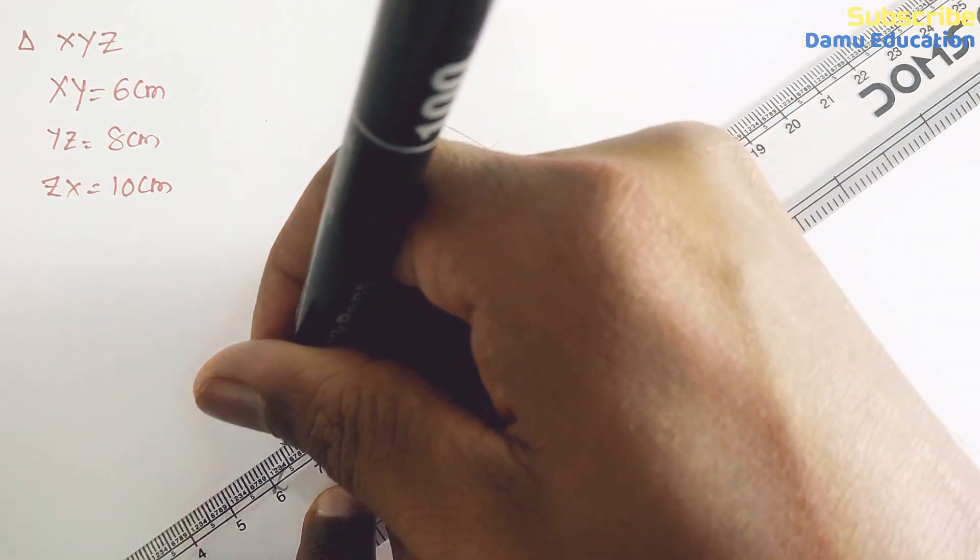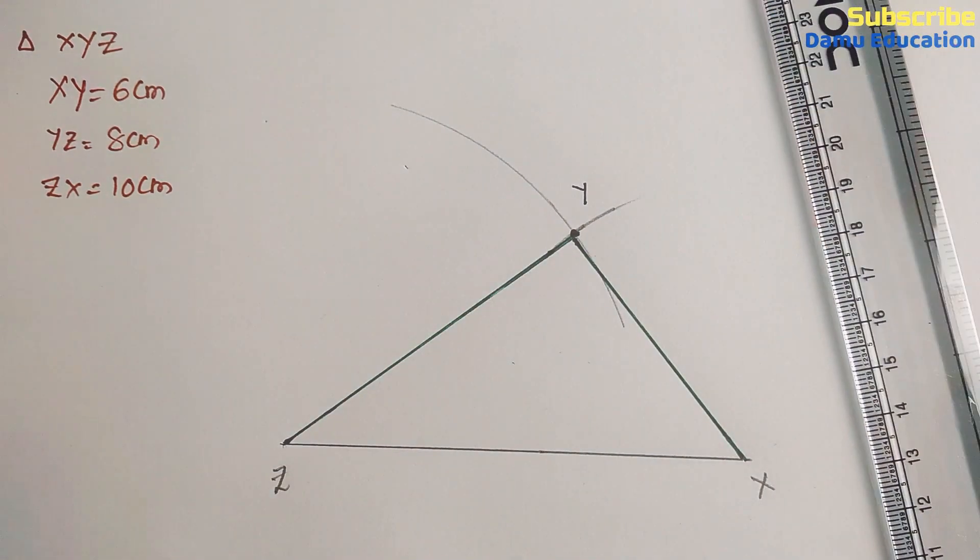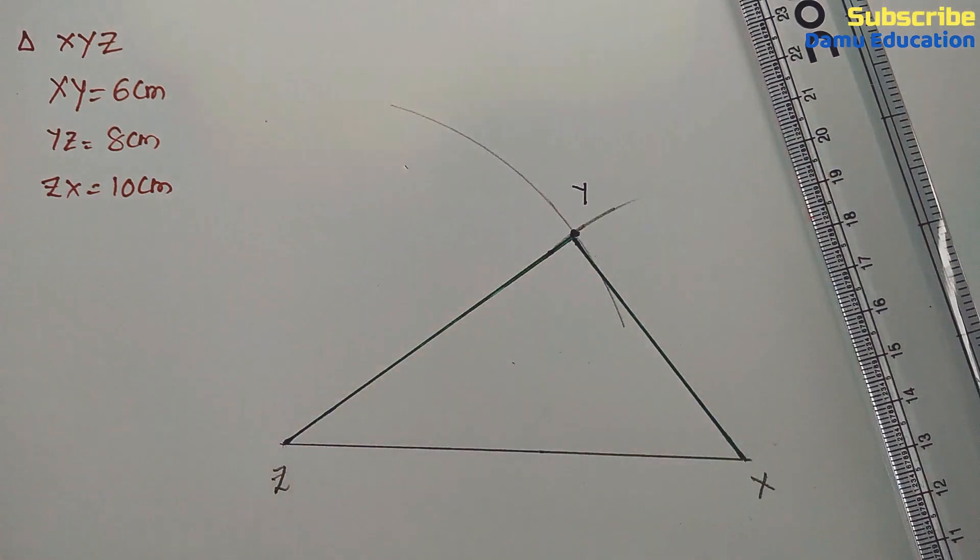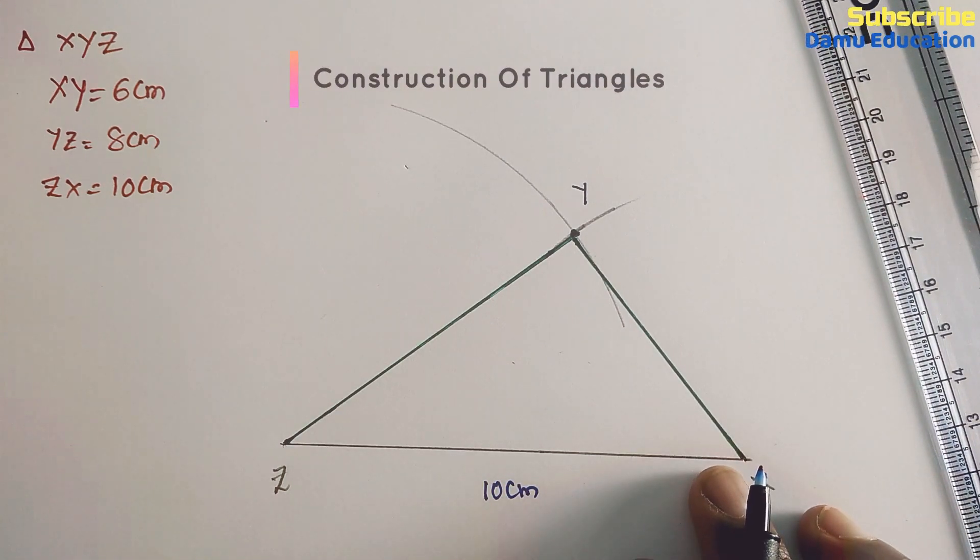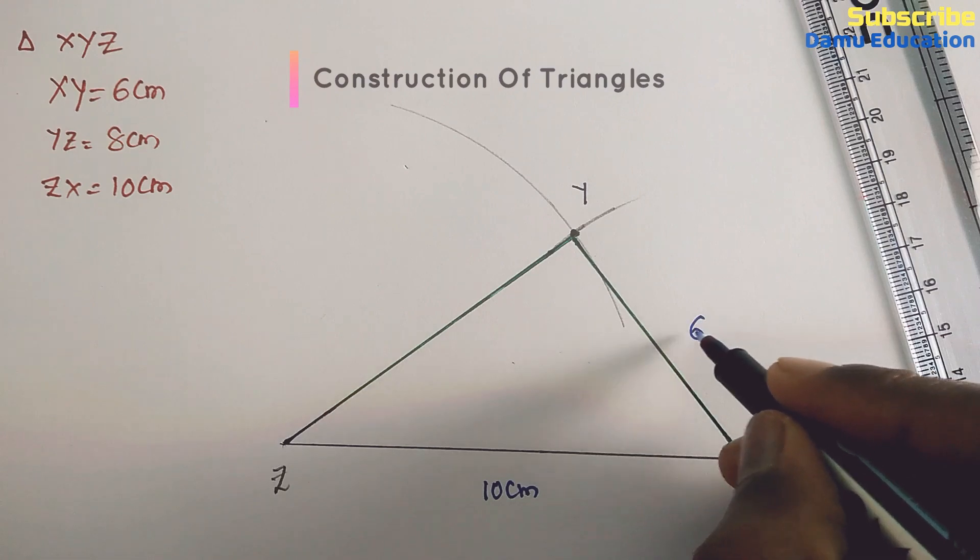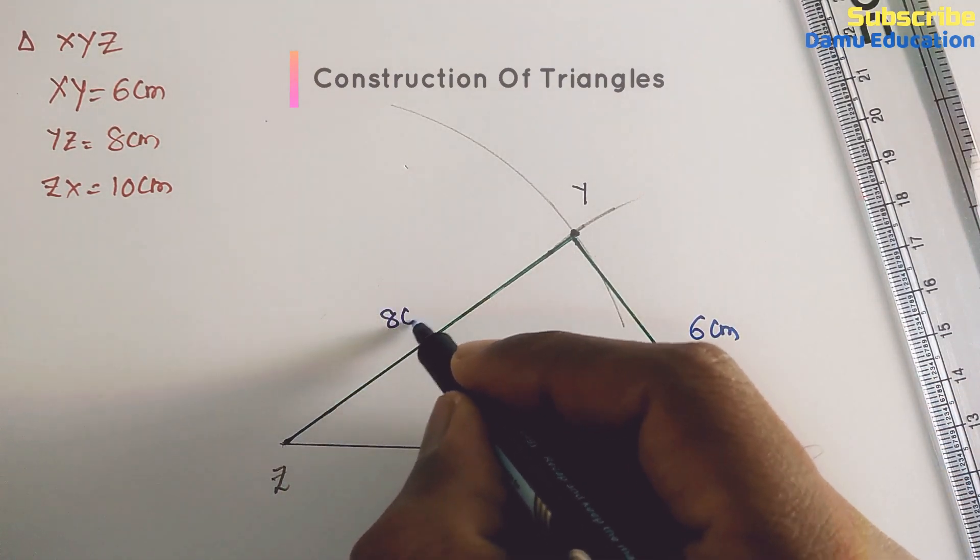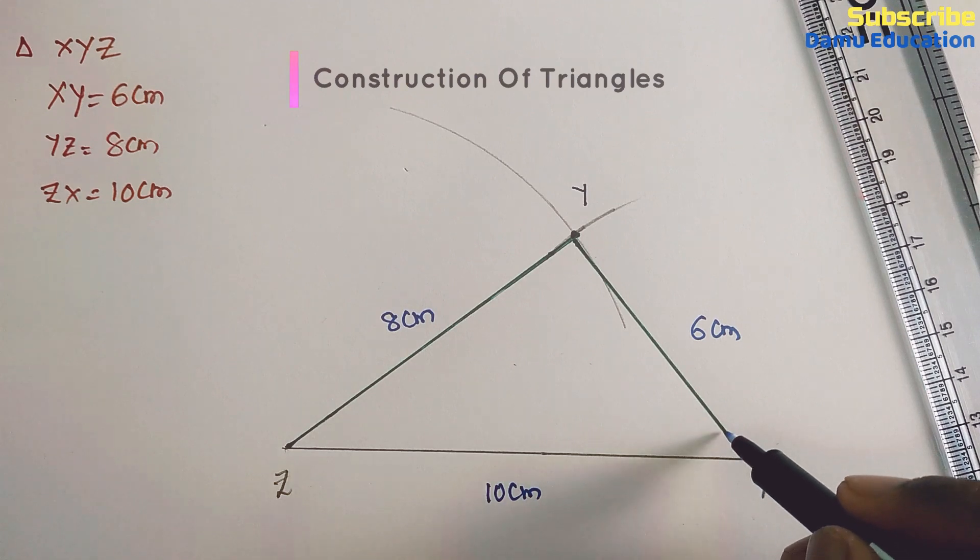Triangle XYZ is constructed. Now write the measurements. What are the measurements? ZX would be 10 centimeters, XY will be 6 centimeters, then YZ will be 8 centimeters. Then we need to find what is the angle at X.